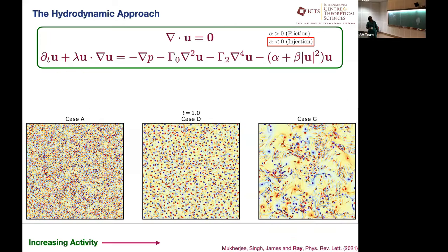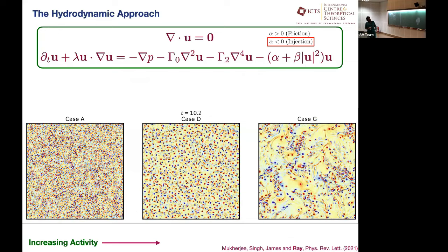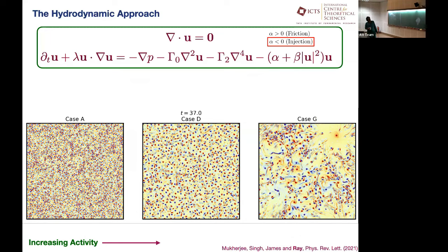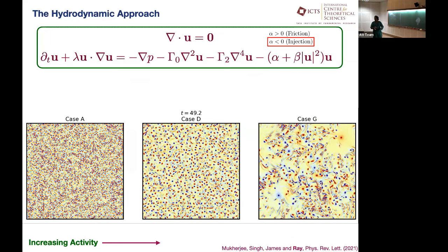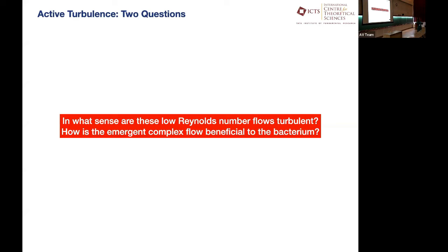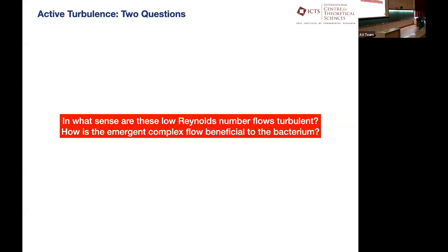The first thing one notices trivially is that when you solve this equation and start changing alpha — less active, more active, even more active — understandably the flow looks different and starts to become more violent. What we wanted to ask, and that's where the turbulence perspective comes in, are essentially two questions: In what sense are these low Reynolds number flows turbulent? And secondly, how is this emergent complex flow beneficial to the bacterium?